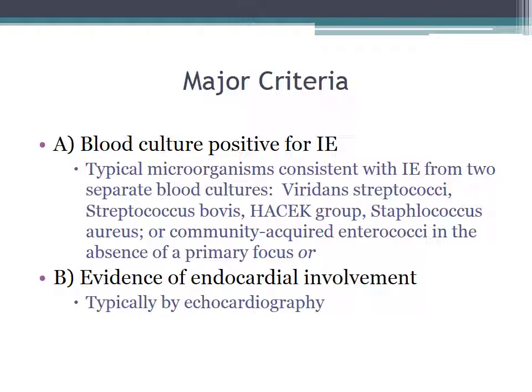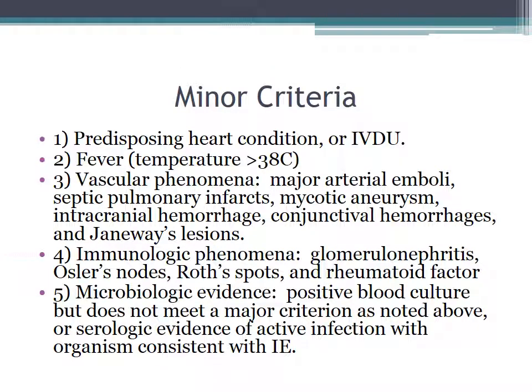The second major criterion is evidence of endocardial involvement, typically by echocardiography. Minor criteria include predisposing heart condition or IV drug use, fever greater than 38 degrees centigrade, vascular phenomena like major arterial emboli, septic pulmonary infarcts, mycotic aneurysms, intracranial hemorrhage, conjunctival hemorrhages, and Janeway lesions. Immunologic phenomena include glomerulonephritis, Osler's nodes, Roth spots, and rheumatoid factor. Microbiologic evidence includes positive blood culture that does not meet a major criterion, or serologic evidence of active infection with an organism consistent with infective endocarditis.